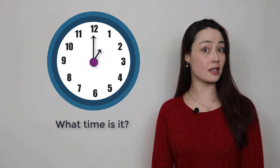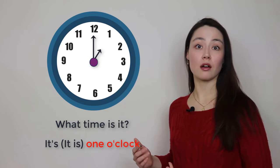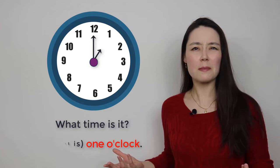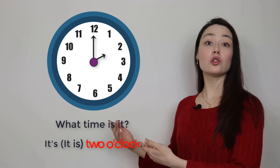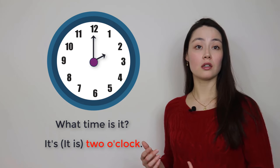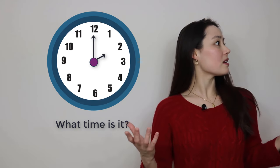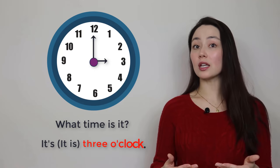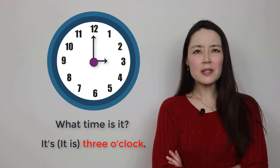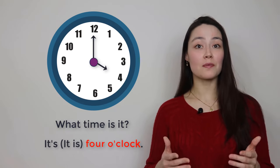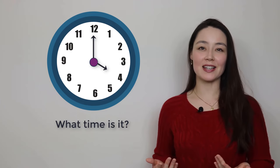What time is it? It's one o'clock. What time is it? It's two o'clock. What time is it? It's three o'clock. What time is it? It's four o'clock. You get the idea.